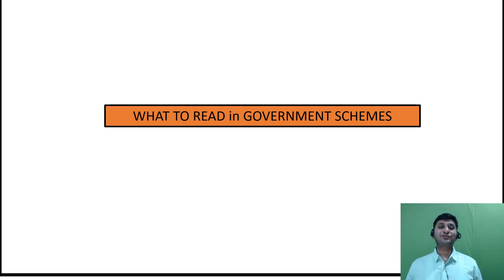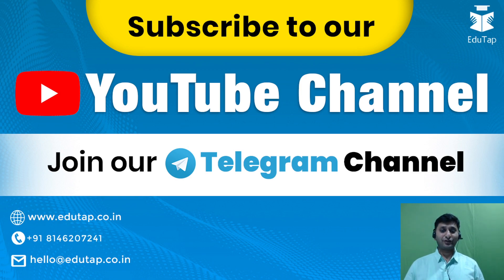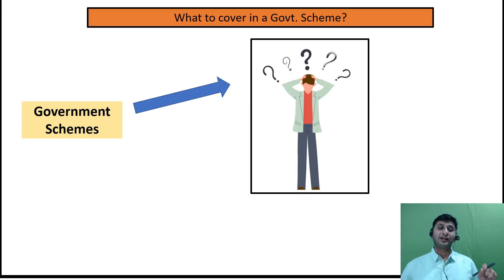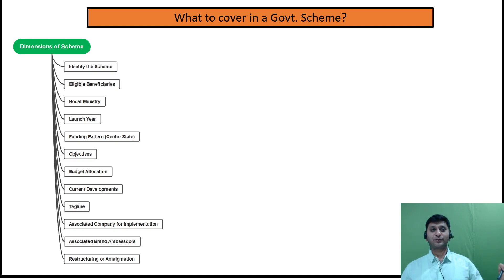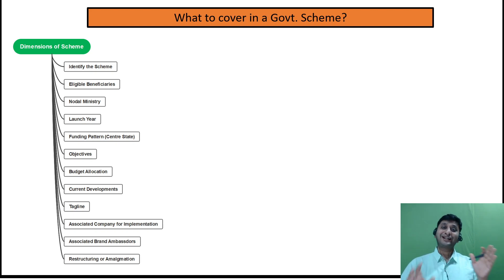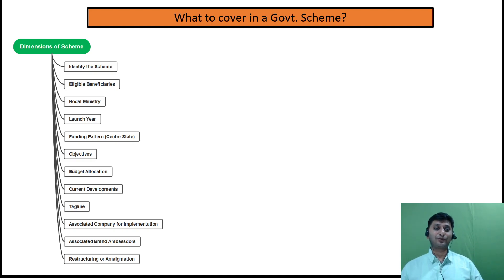Coming to the second point — what are the dimensions to be covered in each scheme — that is what I am going to discuss in this video. Please subscribe to our YouTube and Telegram channels; the link is in the description. As per our research, when we analyzed all the previous year papers of RBI Grade B from 2017 till 2021, we found that these are the most important dimensions — 90% of the time, questions are asked from these dimensions.